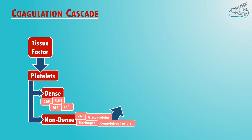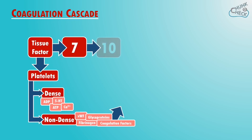Back to the tissue factor: once platelets have bound, tissue factor binds to factor 7 and activates it. Activated factor 7 activates factor 10. Activated factor 10 activates factor 2.